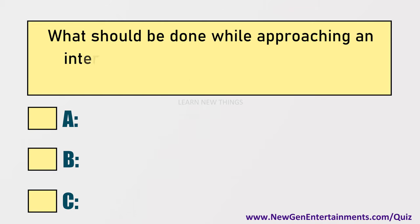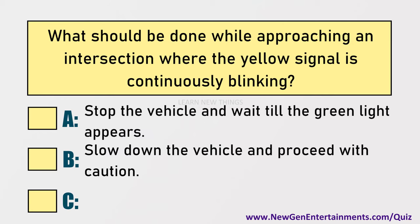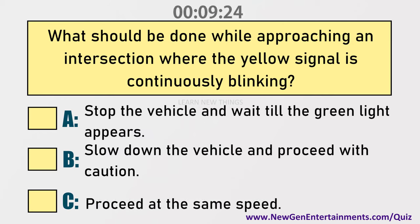What should be done while approaching an intersection where the yellow signal is continuously blinking? Answer: Option B, Slow down the vehicle and proceed with caution.